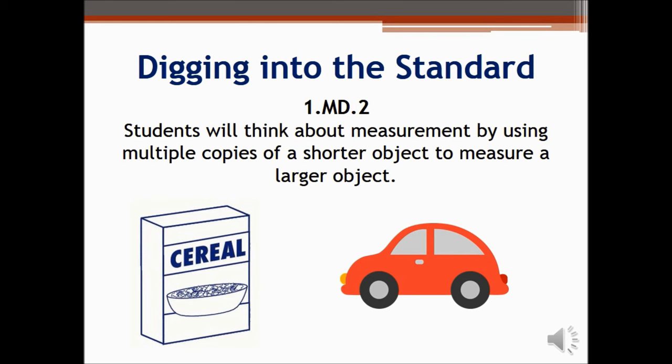Standard 1.MD.2 asks students to measure objects by using multiple copies of a shorter object. Before measuring an object, students must focus on the attribute they are measuring, for example, length or width. They must also realize that they are measuring the longest points of the object, like in the previous slide with the scissors.